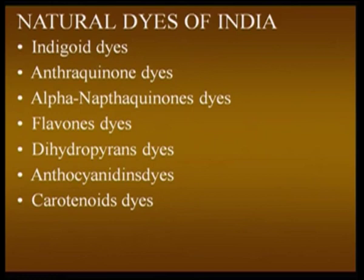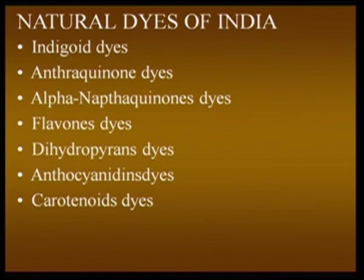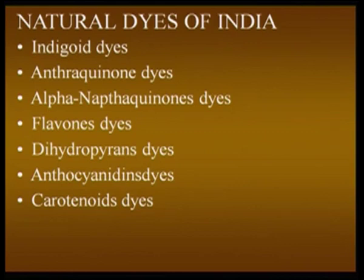Natural dyes in India have been found to be of indigoid, anthraquinone, alpha-naphthaquinone, flavones, dihydropyrane, anthocyanidine, and carotenoid types. These are the various types of dyes which have been isolated and used in India very frequently, and several plants have been identified having indigoid and anthraquinone dyes. Even alpha-naphthaquinone dyes were found to be present in many dye-yielding plants.